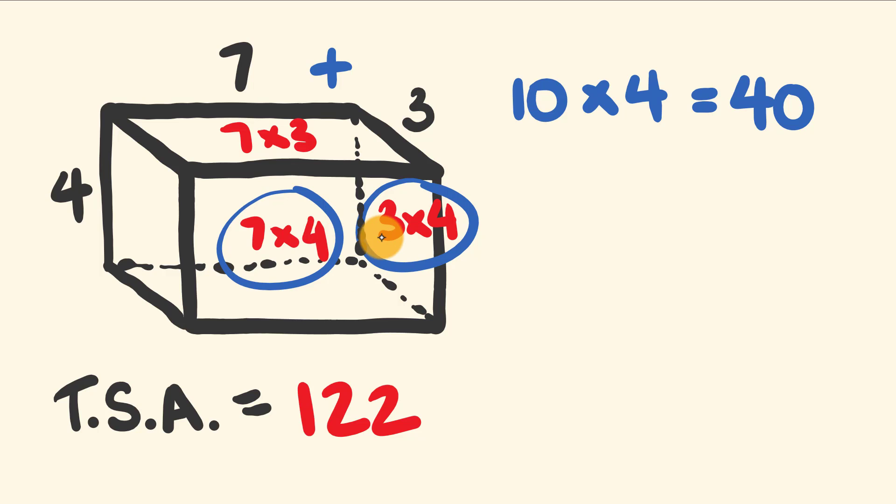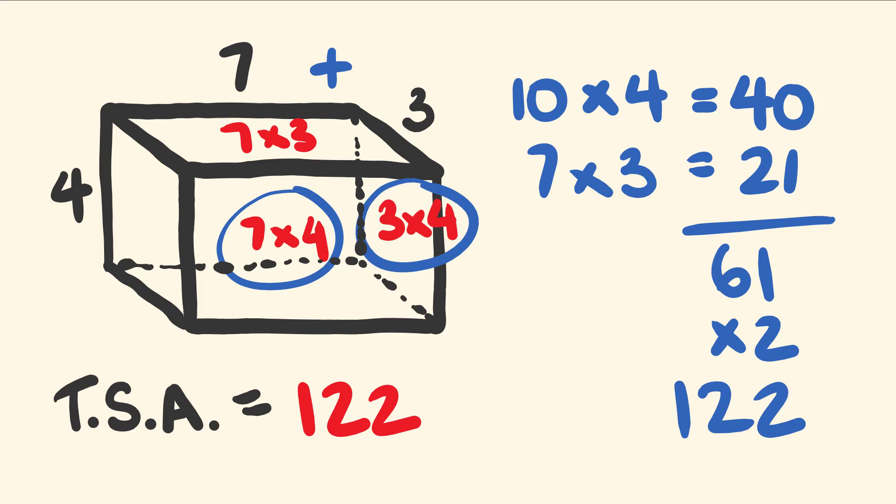That leaves us with one last rectangle. We have these two numbers here, this is a 7 by 3 rectangle. 7 multiplied by 3, this is equal to 21. Now we're going to add these together. 40 plus 21 is equal to 61. Finally we multiply by 2 and we have our answer. 61 multiplied by 2 is 122.